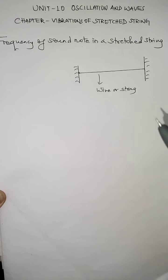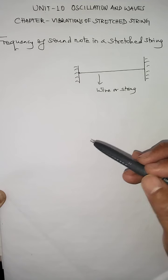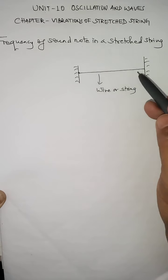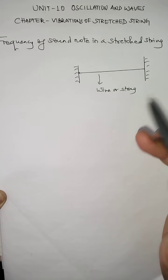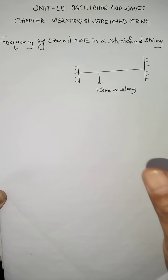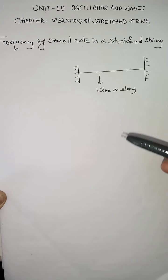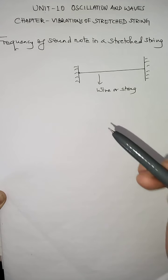We take this wire or string with uniform diameter — that means of the same thickness — and it is perfectly flexible so that it can vibrate, which means it has no rigidity. In practice, a very thin wire like a string fulfills this requirement approximately. The string must be thin, uniform in diameter, and perfectly flexible so that it can vibrate and produce sounds of different frequencies.